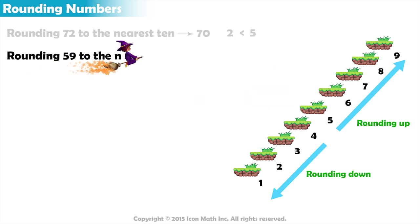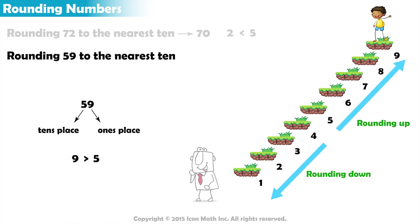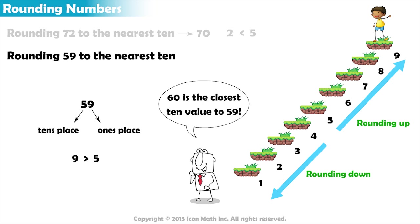What about 59 rounded to the nearest 10? We have 5 in the tens place — this is the place we are rounding to. The place on its right is the ones place and it has a 9. 9 is greater than 5, so we round up. The closest 10 value bigger than 59 is 60, so we round up to 60.